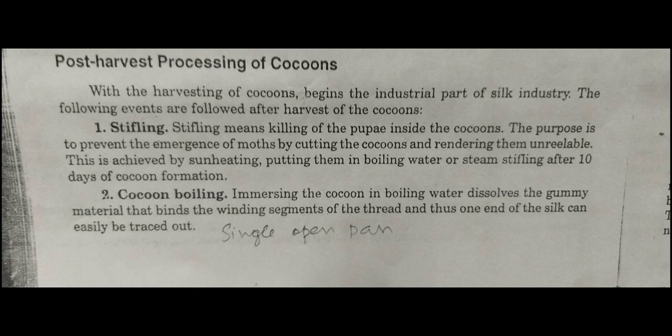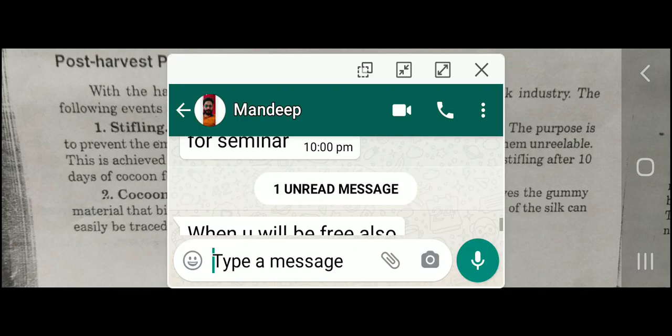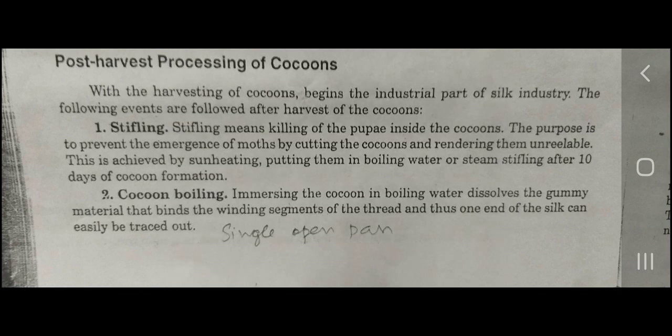This is achieved by sun-heating. After about 10 days of cocoon formation, we need to kill the pupa inside. This can also be done using boiling water, which dissolves the gummy material — the sericin — so that one end of the silk thread can easily be traced out. This is what we have to do in the post-harvest process.